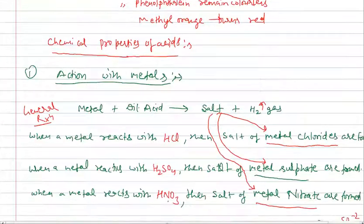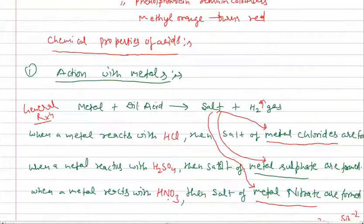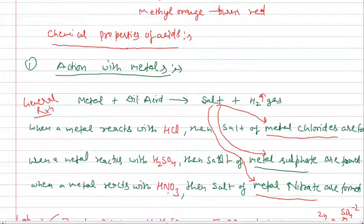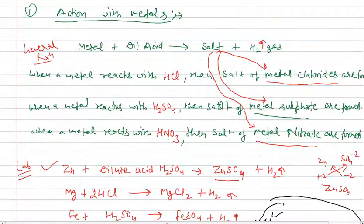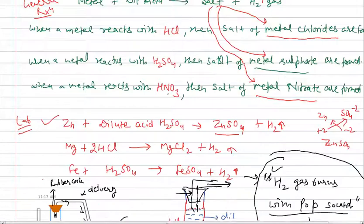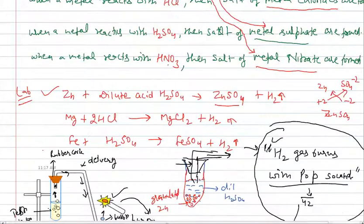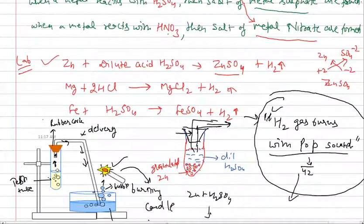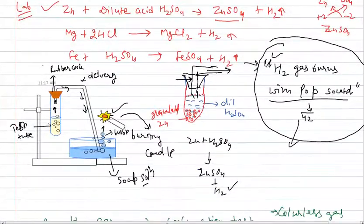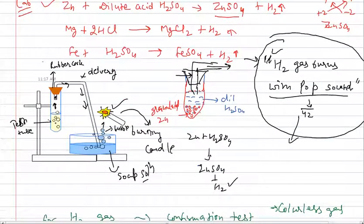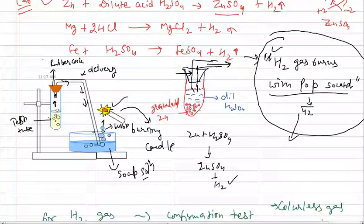Chemical properties of acids: first we have discussed the relation with metals. There are three actions, and there is the confirmation activity for hydrogen gas.